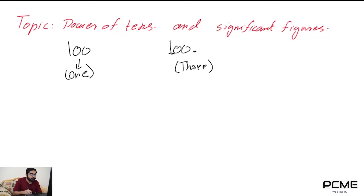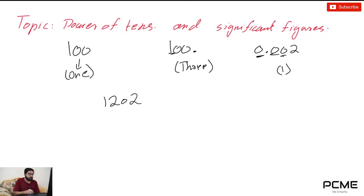Here I have 0.002 — the leading zeros have no significance at all, so there is just one significant figure. However, if I have the number 1202, the significant figures are four, because that zero has significance. According to the second rule, zeros between two non-zero digits are significant — so here you have one, two, three, and four significant figures.